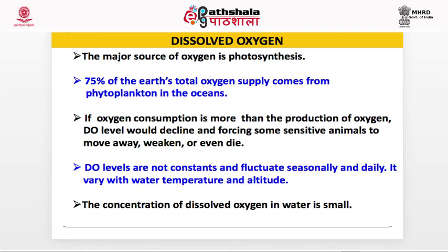The major source of oxygen is photosynthesis. 75% of the earth's total oxygen supply comes from phytoplankton in the ocean. If oxygen consumption is more than the production of oxygen, DO level would decline, forcing some sensitive animals to move away, become weak, or even die. DO levels are not constant and fluctuate seasonally and daily. They vary with water temperature and altitude.